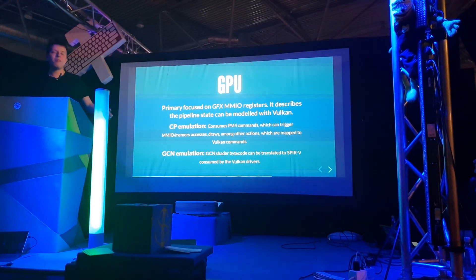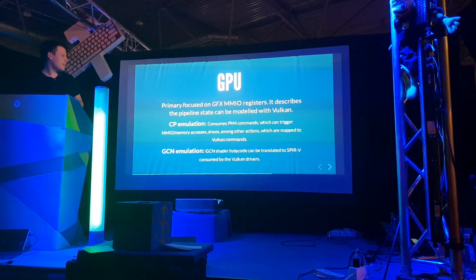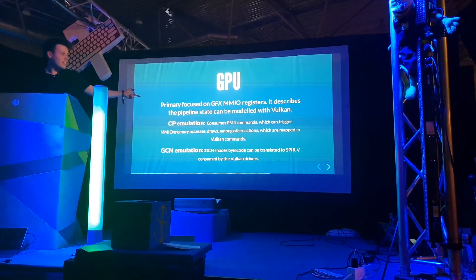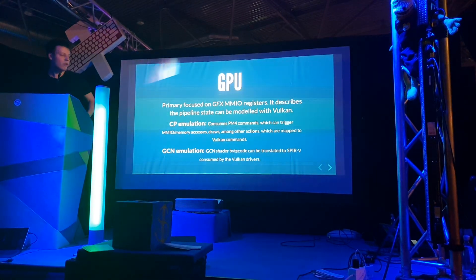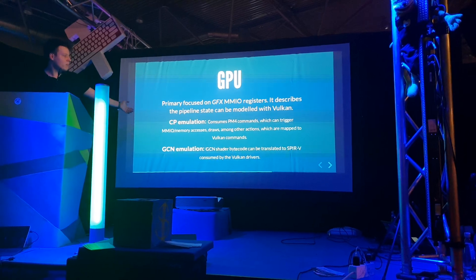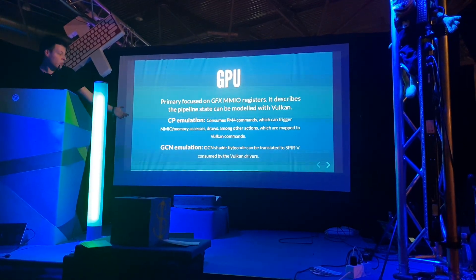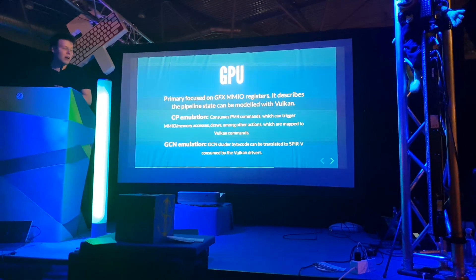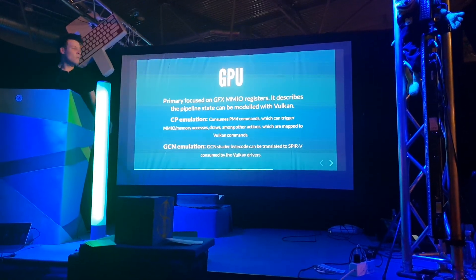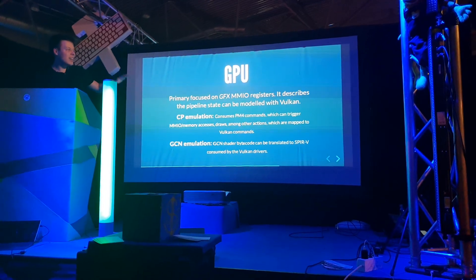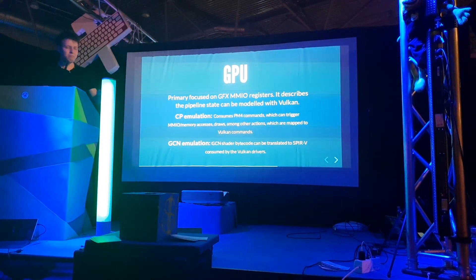GPU has a lot of MMIO registers — display, audio, even SAMU from before. But really the graphics engine, GFX, is the only one that truly matters. The pipeline state it describes with those MMIO registers can be modeled with Vulkan — a modern graphics API. With that we can also do command processor (CP) emulation, which handles PM4 packets. GCN emulation would involve recompiling shaders to SPIR-V, which is what Vulkan consumes, and your drivers would turn that into whatever your host GPU understands. With this, we would solve graphics — though this is highly experimental, so we don't have graphics output just yet. We are working on it, and there is some GCN emulation code in progress.